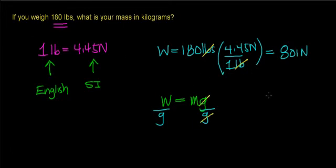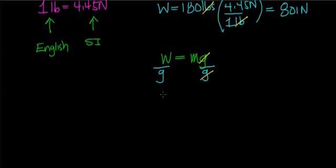What you should see is that you get an equation for your mass, which says that mass is equal to weight divided by the gravitational acceleration here on Earth.